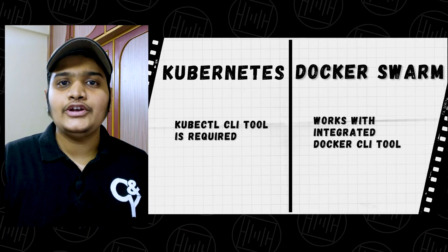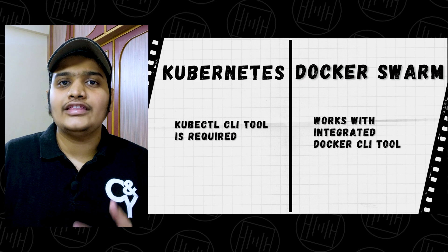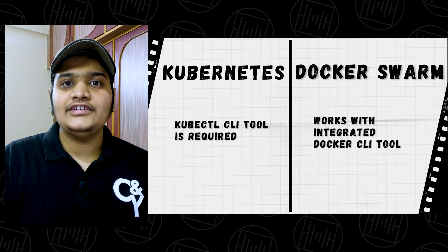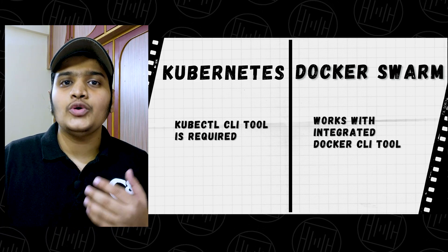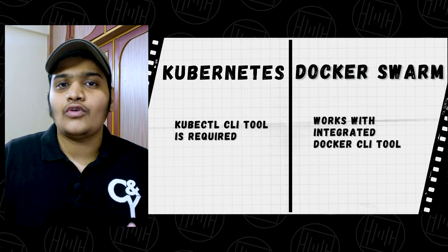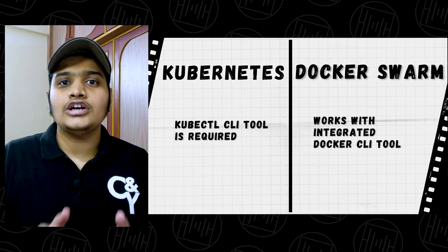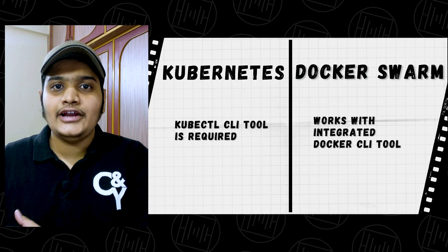For Kubernetes, you have to install a new CLI tool and there is a learning curve — you need to learn the Kubernetes CLI, which is kubectl (or kube controller, or kube cuttle, however you prefer to say it). Docker Swarm, on the other hand, doesn't require a new CLI tool — it integrates well with the existing Docker CLI. These are all the differences and similarities between Docker and Kubernetes, and between Docker Swarm and Kubernetes.